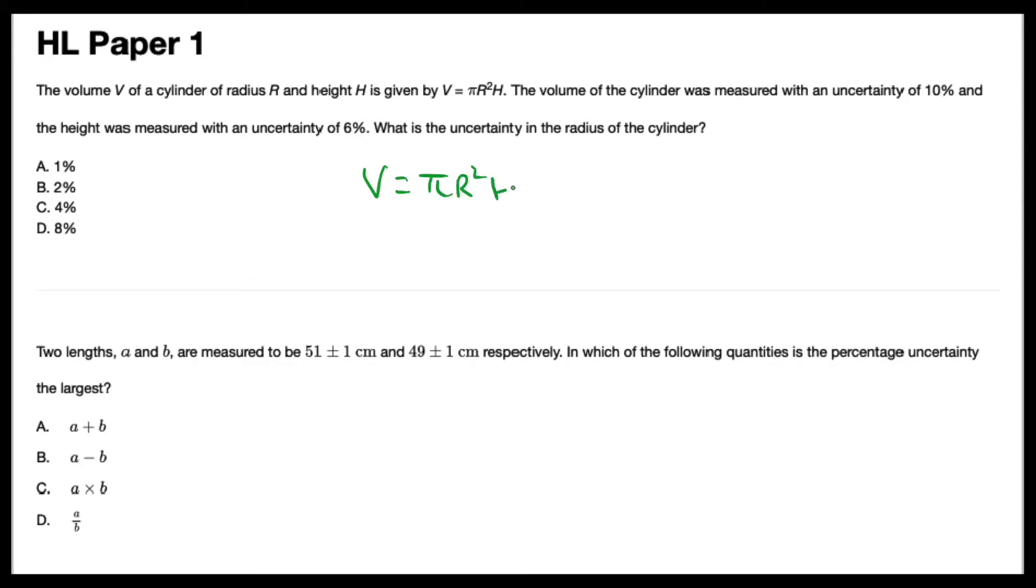To solve this problem, we need to move the radius r on the left-hand side. So radius is equal to volume divided by height divided by pi, and then we need to take the square root.